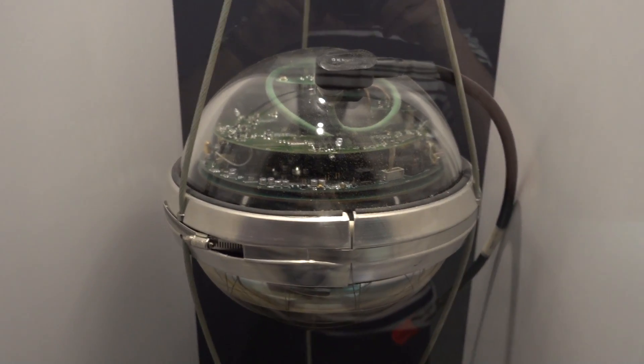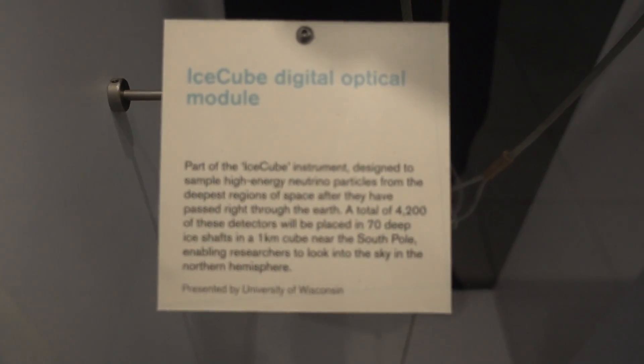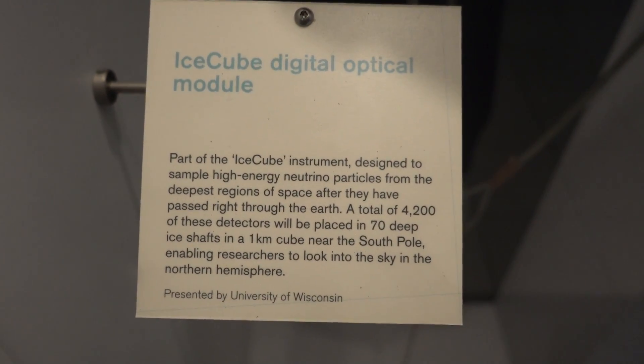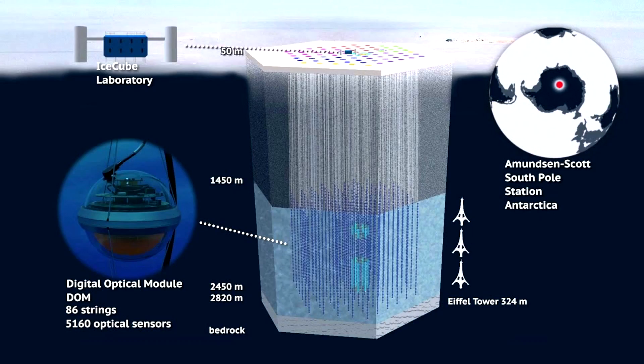Hi, just a quick video. Check this out. This is the IceCube Digital Optical Neutrino Sensor Module. They're going to manufacture 4200 of these detectors, placed in 70 deep ice shafts near the South Pole in a one kilometer cube.